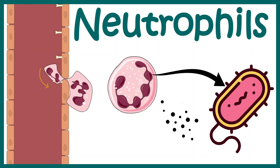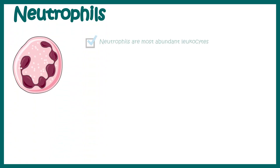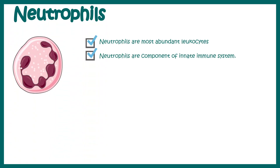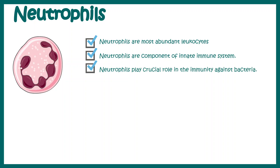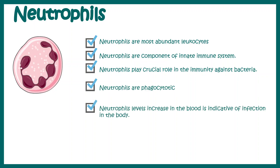In this video, we'll talk about neutrophil, which is a very important immune cell. Neutrophils are the most abundant leukocytes. They are a component of the innate immune system. Neutrophils play crucial roles against bacteria. They are highly phagocytotic, and neutrophil levels increase in the blood when there is an infection in our body.